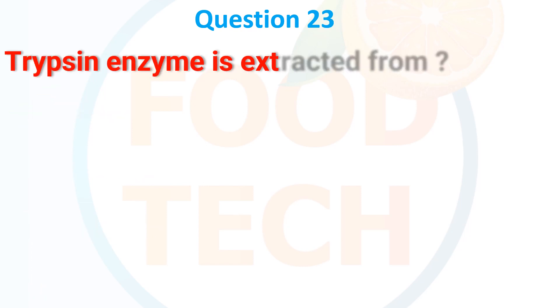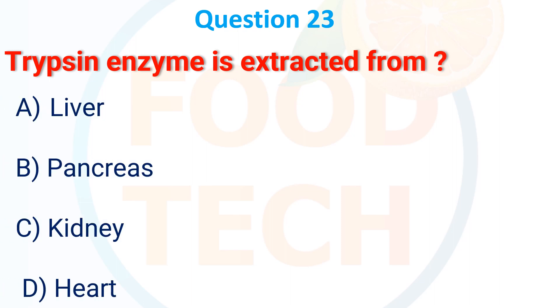Trypsin enzyme is extracted from: A. Liver, B. Pancreas, C. Canine, D. Heart. The answer is B. Pancreas.